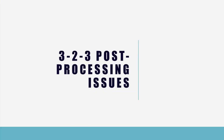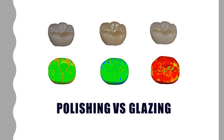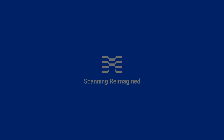Finally, let's talk about issues concerning post-processing methods. On the left is immediately after sintering, in the middle is polished, and on the right is the result of glazing. Glazing is used because it's easier to process multiple pieces simultaneously and can reproduce a more natural texture, but be aware that this can result in a roughly 50 to 100 micrometers increase.